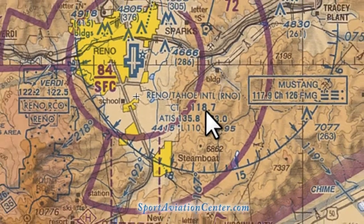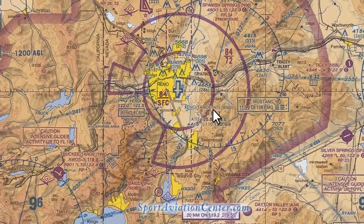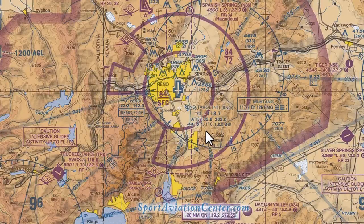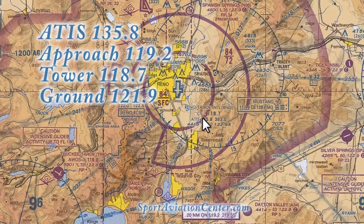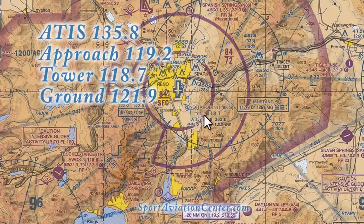After the control tower, we need the ground frequency. Unfortunately, the ground frequency is not listed on the chart here, so you have to go into the airport facilities guide to get it. When we look there, it's 121.9. Typically it's 121.8 or 121.9, and many times the tower will say 'go to ground on point niner.' So we've got ATIS first, then approach on 119.2, then tower on 118.7, then ground after we land.